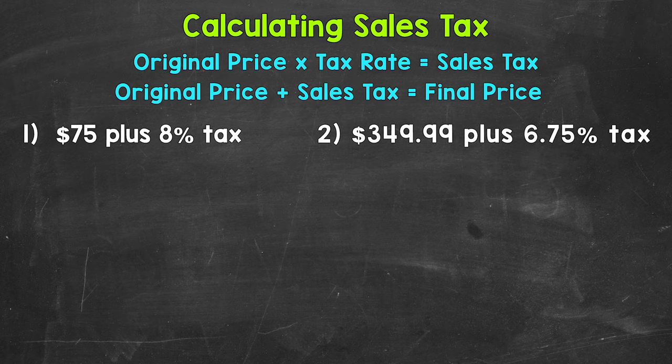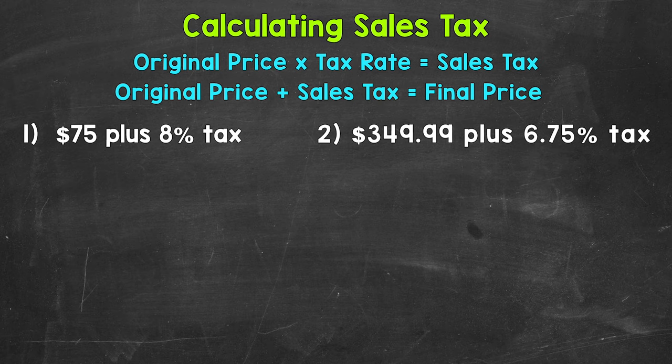The first thing we want to do is calculate how much sales tax we will be paying. We do this by multiplying the price by the tax rate. The tax rate is in the form of a percent, and we want to convert it to decimal form. Percent means per 100, so we divide by 100, which is the same as moving the decimal twice to the left.